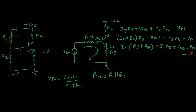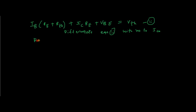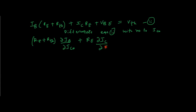Let us call this equation 2. Differentiating equation 2 with partial differentiation with respect to ICO — RE and RTH are resistances which are constant. This reduces to: (RE + RTH)·δIB/δICO + RE·δIC/δICO = 0. VBE is a constant so its derivative is 0, and VTH is also 0.